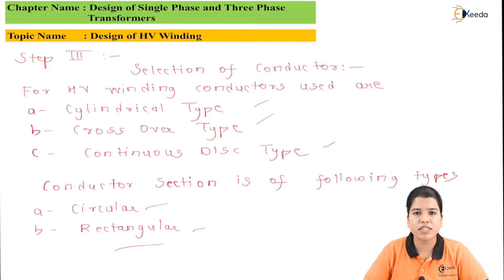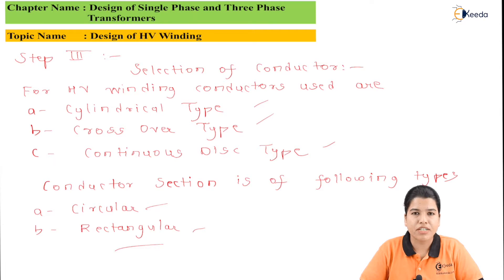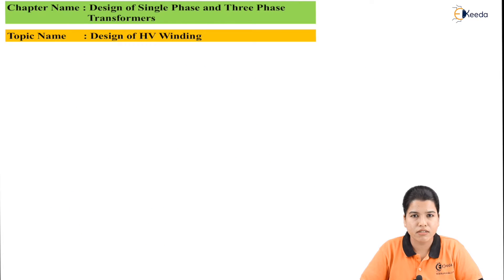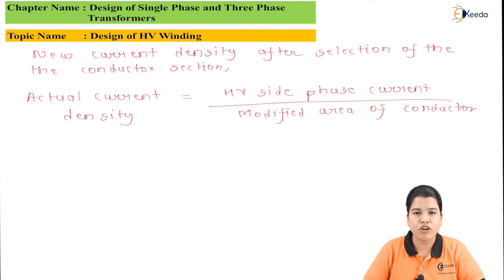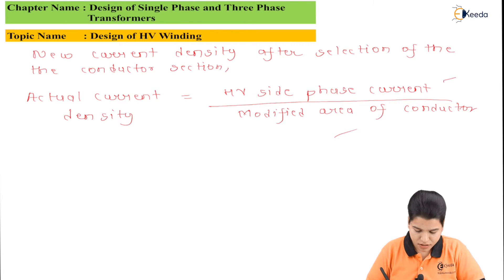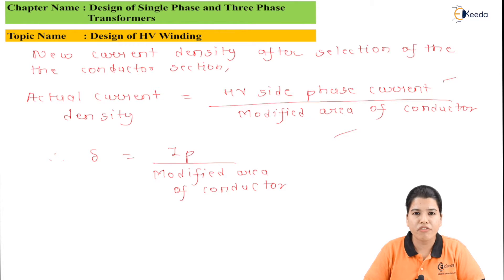If we have selected a circular conductor section, we then need to find the revised value of current density. The actual value of current density delta equals the HV side phase current IP divided by the modified area of the conductor. This updated value of current density should be used for all further calculations.